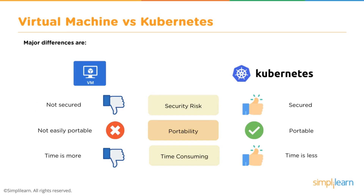With virtual machines there are inherent security risks, whereas Kubernetes is inherently secure. Virtual machines are not easily portable, whereas Kubernetes works with Docker container solutions and is extremely portable — you can spin up and spin down and manage your infrastructure exactly the way you want, scaling it on the demands of customers. Kubernetes is also much less time consuming than working with a virtual machine.